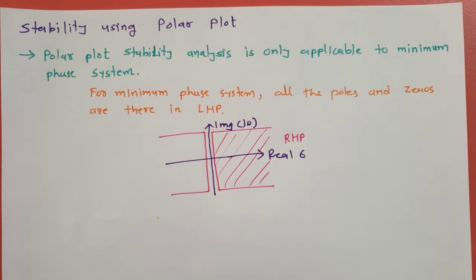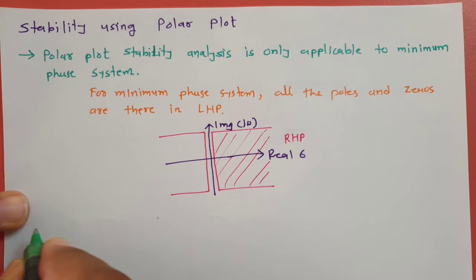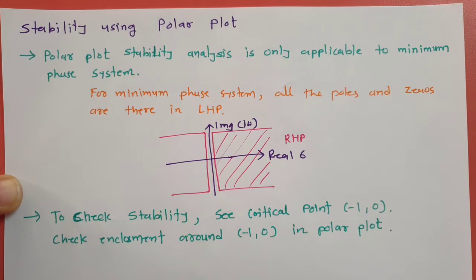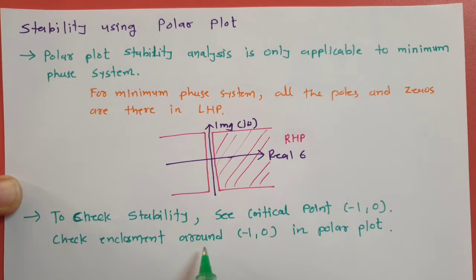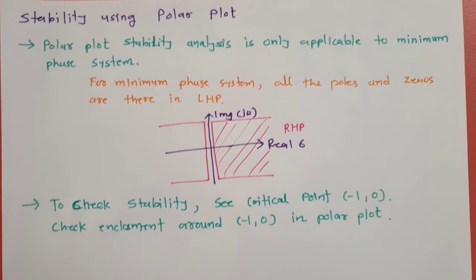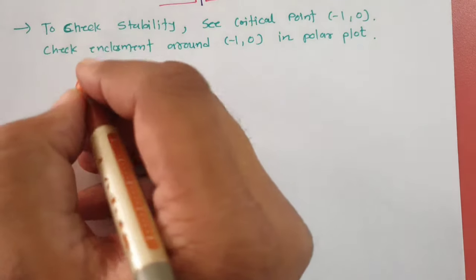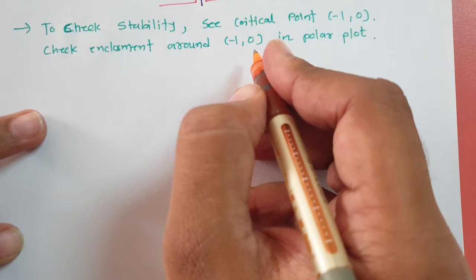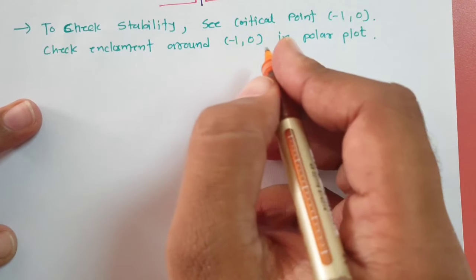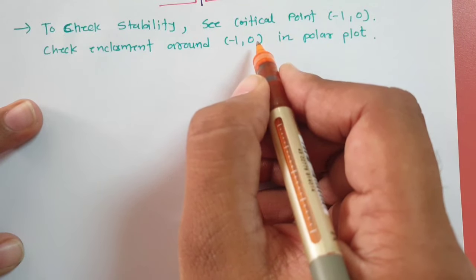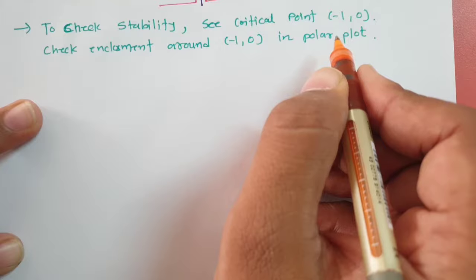To check stability using polar plot, we need to see the encirclement of the critical point, which is minus 1 comma 0. If the minus 1 comma 0 point is enclosed in the polar plot loop, the system is unstable. If it is not enclosed, the system is stable.